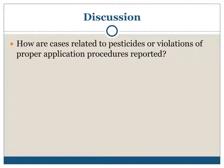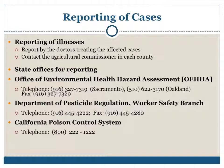Discussion: how are cases related to pesticides or violations of proper application procedures reported? Reporting of illnesses: report to the doctors treating the affected cases and contact the Agricultural Commissioner in each county. State offices for reporting include the Office of Environmental Health Hazard Assessment — Sacramento telephone: 916-327-7319, fax: 916-327-7320; Oakland telephone: 510-622-3170 — and the Department of Pesticide Regulation, Worker Safety Branch, telephone: 916-445-4222, fax: 916-445-4280. California Poison Control System telephone: 800-222-1222.